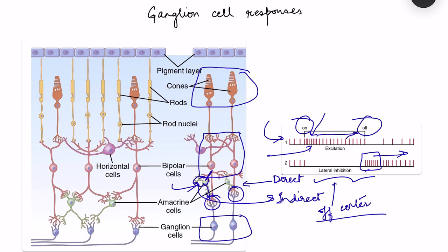Neurotransmitters released by rods and cones are glutamate. Amacrine cells release many neurotransmitters: inhibitory ones include GABA and glycine, which inhibit ganglion cells; others include dopamine and acetylcholine. Different types of amacrine cells have been identified, making retinal processing increasingly complex.